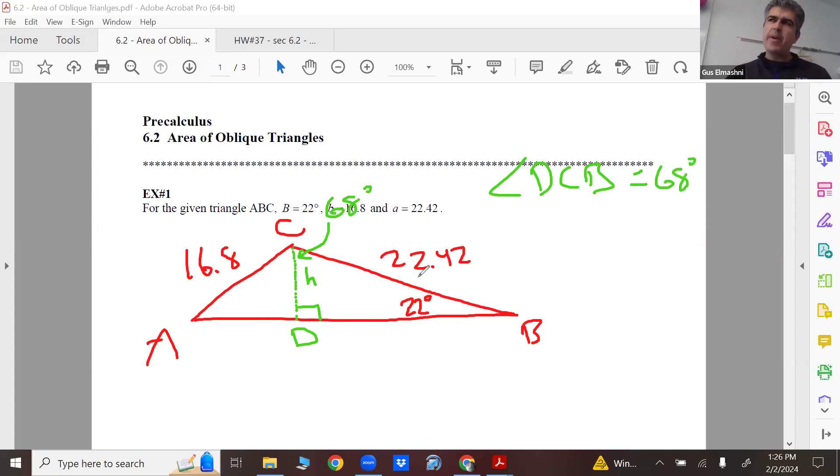Okay, how would I solve for h just using basic SOH CAH TOA rules? Sine 22 degrees equals what? h over what? What's the hypotenuse? This triangle right here. Good, perfect, excellent.